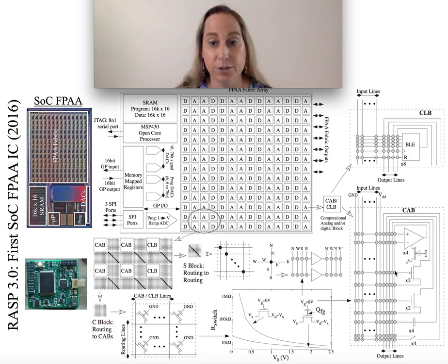Now of course you still have the full routing fabric on both sides of that. This is all done in a Manhattan geometry. Remember, now you're talking about having C blocks and S blocks as well as the CABs and CLBs interdigitated there.